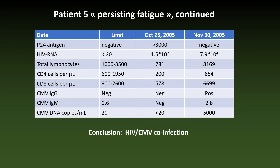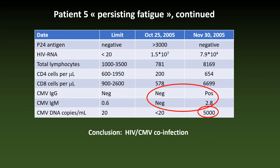Here are the results from our patient. He seroconverted for CMV, with both IgG and IgM antibodies absent on October 25 but present on November 30. In addition, he had moderate CMV viremia on November 30. In conclusion, this was a case of HIV-CMV co-infection with characteristic extreme lymphocytosis. Both infections are transmitted sexually, so it's not surprising they travel together. The patient was put on HAART and slowly improved; the blood count was normal one month later and the CMV viremia had disappeared.